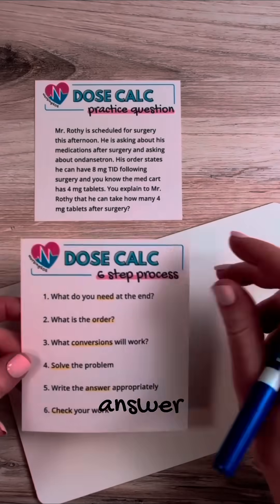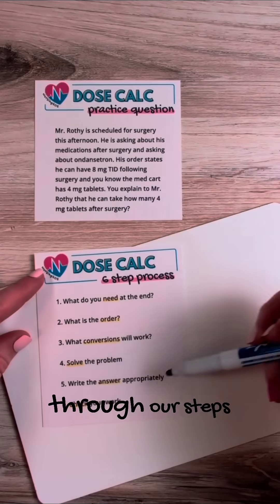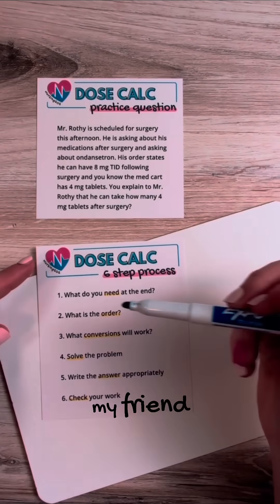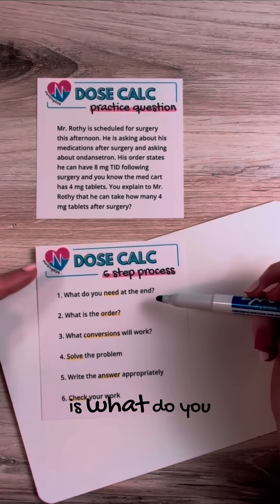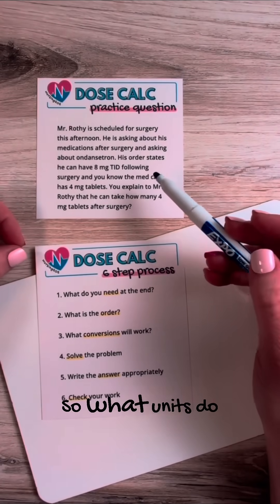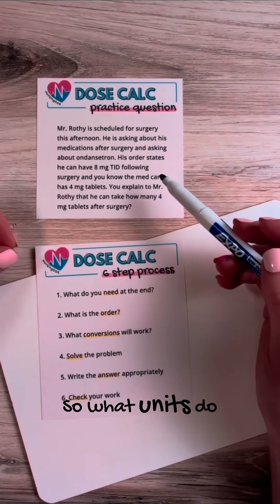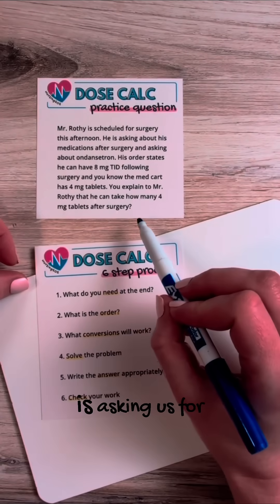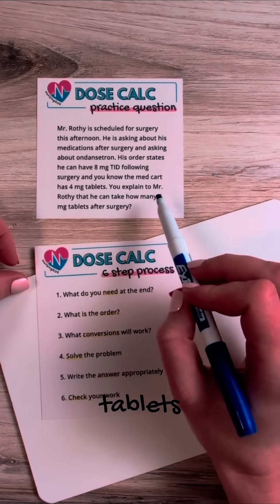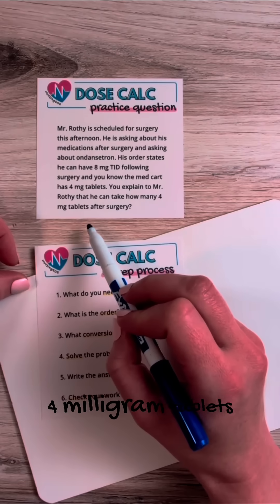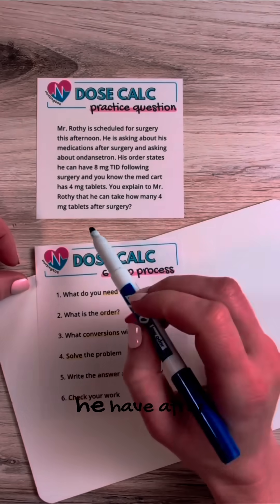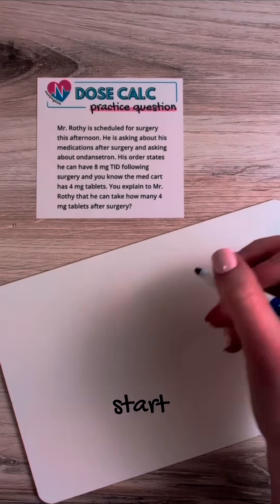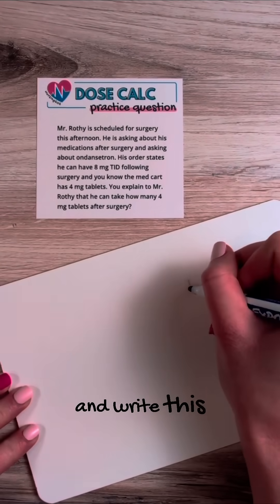Anytime we answer a dose calc question, we're always going to walk through our steps. And the first step, always, my friend, is: what do you need at the end? What units do we need to end up with at the end? This question is asking us for tablets — how many of those four milligram tablets can you have after surgery? So we're going to start with tablets.